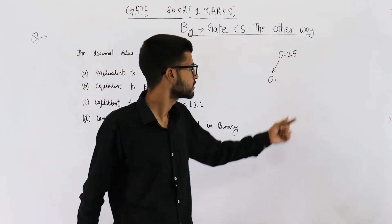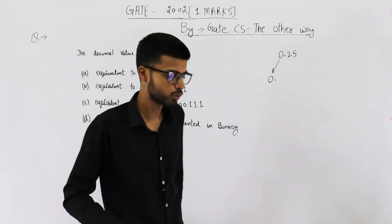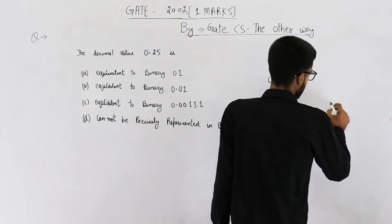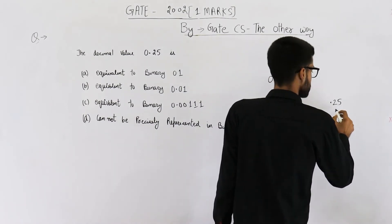Now we want to go from base 10 to base 2. That means this number will be multiplied by 2.